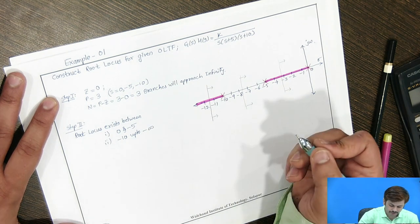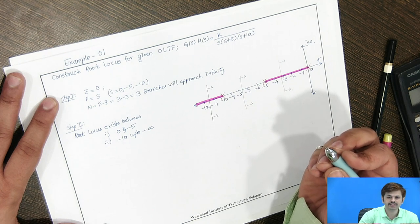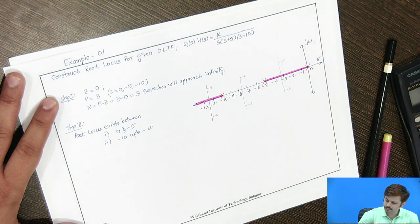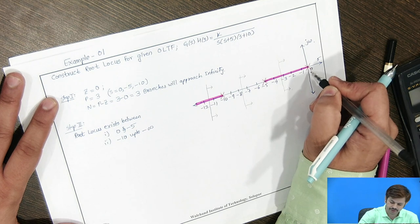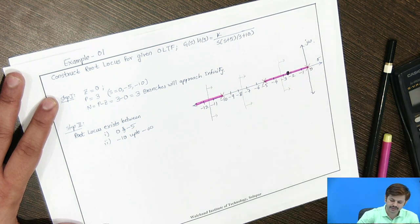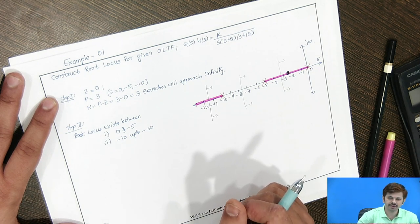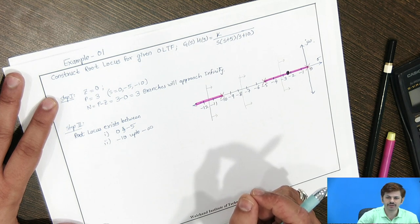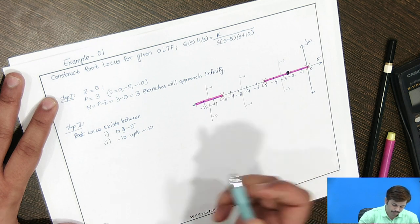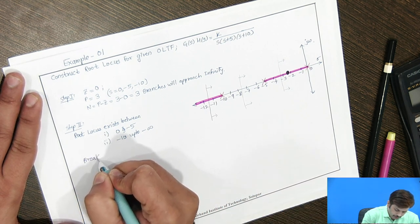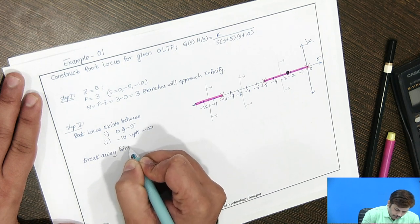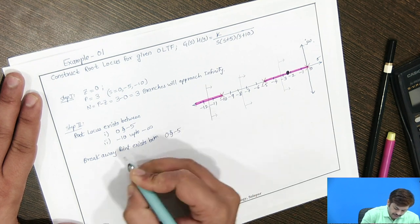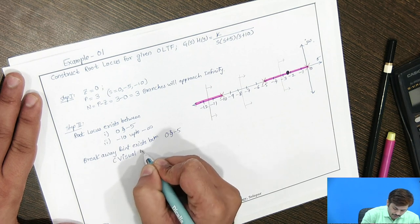Apart from this, we check for the possibility of a breakaway point. By visual prediction, at least one breakaway point exists between 0 and -5, because these are two adjacently placed poles with root locus between them. Therefore, there is a chance that a minimum of one breakaway point exists between these two adjacent poles, and we can note this by visual method.